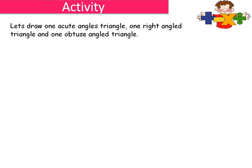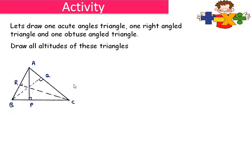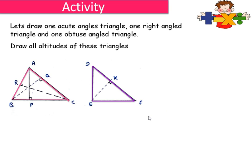Let us draw one acute angle triangle, one right angle triangle, and one obtuse angle triangle, and draw all altitudes of these triangles. For the acute angle triangle: AP is the altitude on side BC, BQ is the altitude on side AC, and CR is the altitude on side AB. Triangle DEF is a right angle triangle at angle E. Here DE and EF are perpendicular to each other, and EK is perpendicular on side DF.